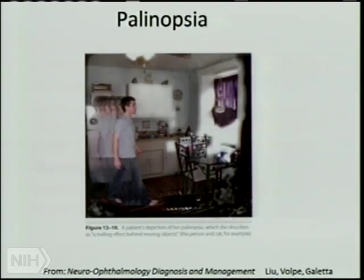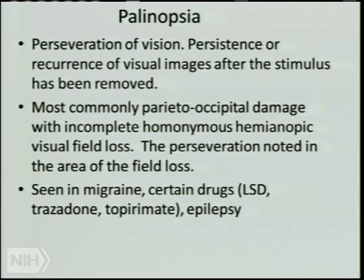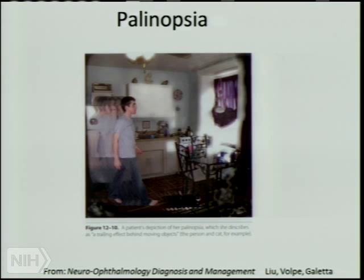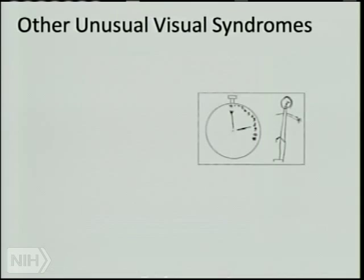There are trailing images sometimes more specifically termed polyopia. One case involved a patient with an occipital epileptic focus who would watch TV, turn away, and still see Walter Cronkite. The picture from a textbook shows multiple cats and figures from perseveration.